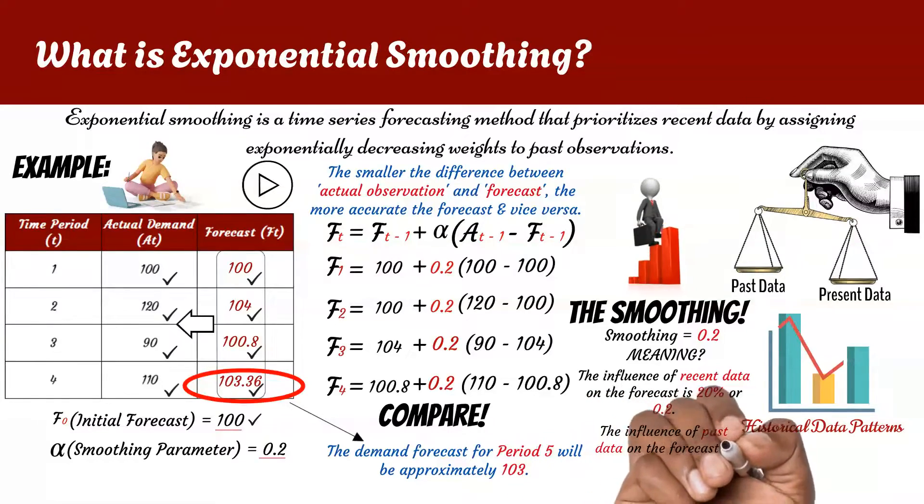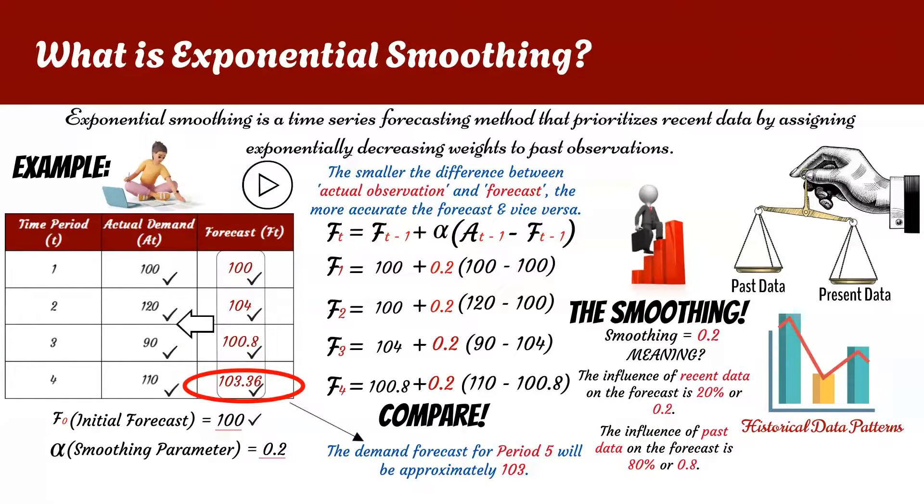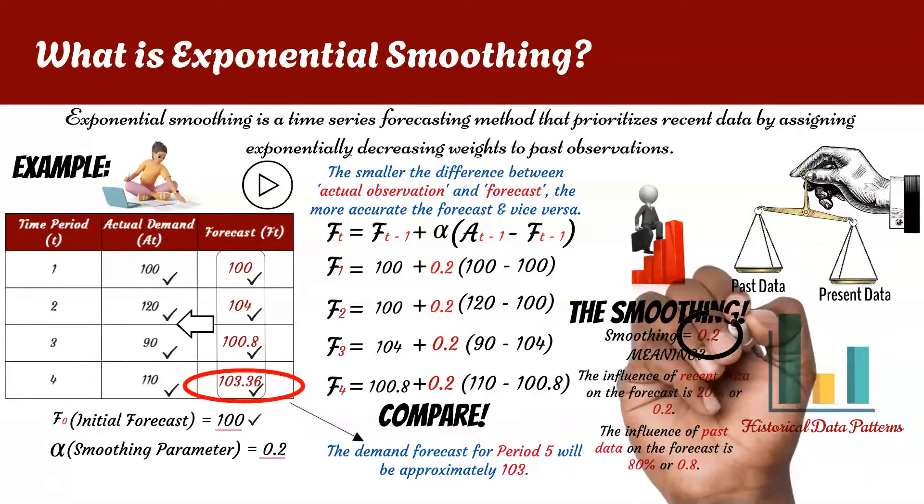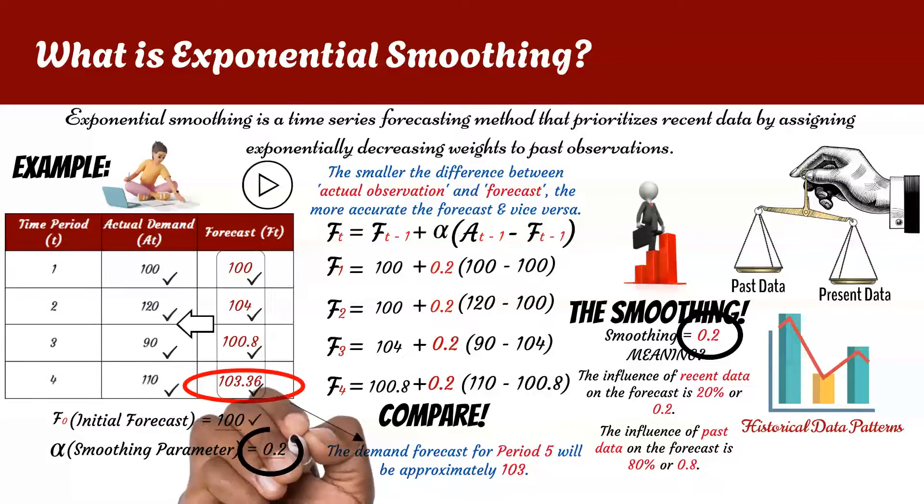This means that the model is giving more weight to the historical forecast and less weight to the most recent observation. A smaller value of alpha of 0.2 makes the forecast less responsive to changes in the data, providing a smoother and more stable prediction over time.